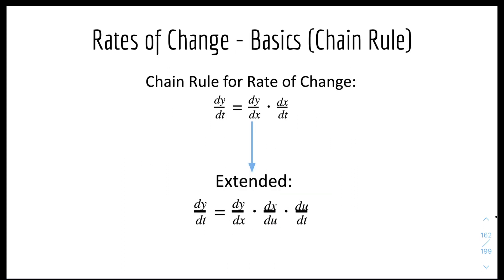Then we have some basics for the chain rule. So for the rate of change, if we have dY over dT, it's basically equal to dY over dX times dX over dT, because you can cancel those two out to remain with dY over dT. We also have an extended rate of change with three different variables: dY over dT equals dY over dX times dX over dU times dU over dT — it cancels out like a telescoping series.